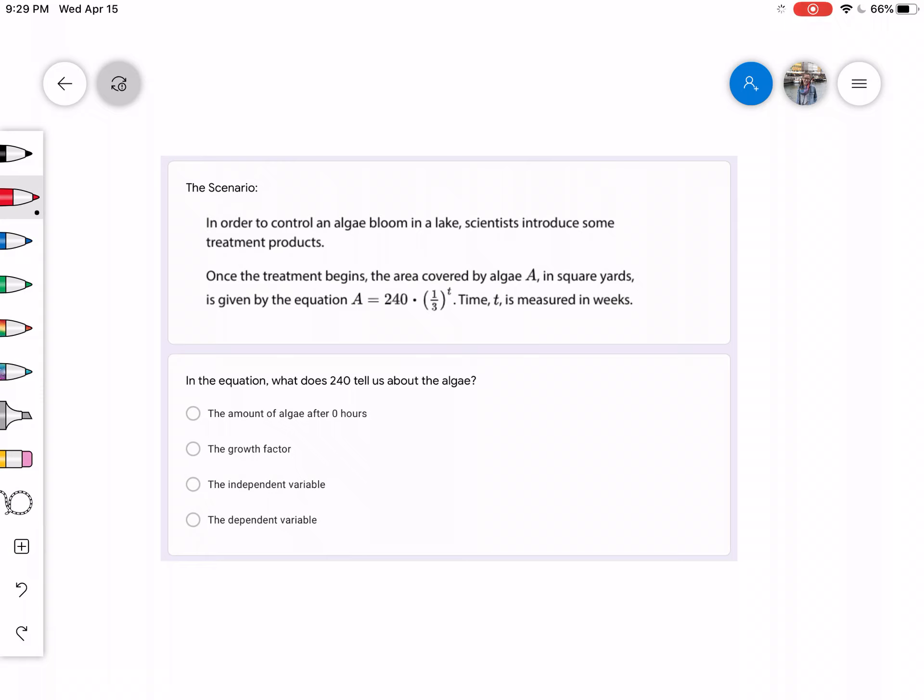So the scenario we had in the problem yesterday was that in order to control an algae bloom in a lake, scientists introduced some treatment products. Once the treatment begins, the area covered by algae, A, in square yards is given by the equation A equals 240 times one third raised to the T power, time T is measured in weeks.